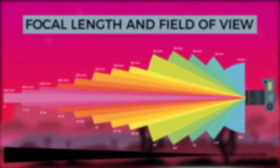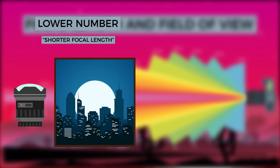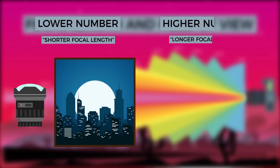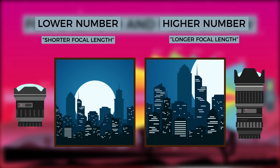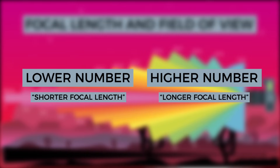The lower the number, the wider the field of view and lower the magnification, increasing the amount of the scene that our camera can see. The larger the number, the narrower the field of view and greater the magnification, decreasing the amount of the scene our camera can see. It's also worth noting that oftentimes photographers will refer to larger focal lengths as longer, and smaller focal lengths as shorter.